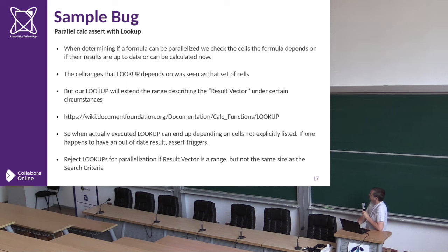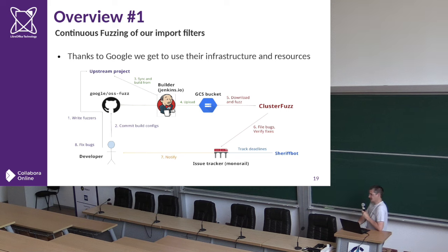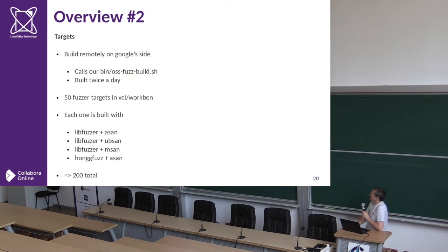The third category is fuzzing. For Coverity we build locally and send up to their servers; for OSS Fuzz it's the opposite - we configure things to let Google know how to build our code, they build it on their servers. We have about 50 different fuzzing targets - 49 different file formats: Microsoft Word, Excel, our own file formats, and obscure formats like HWP Hangul Word Processor and Lotus Word Pro - all with a fuzzer for import.